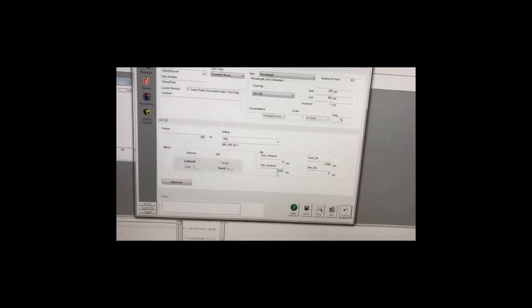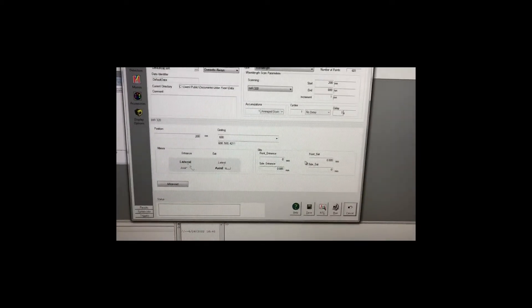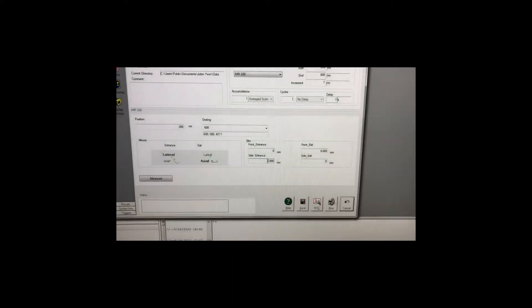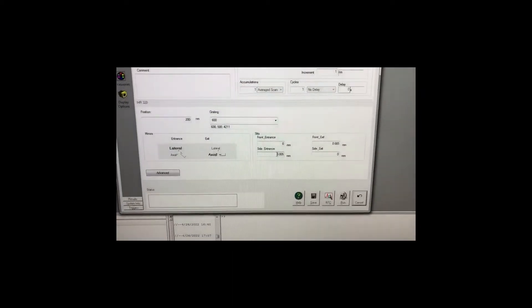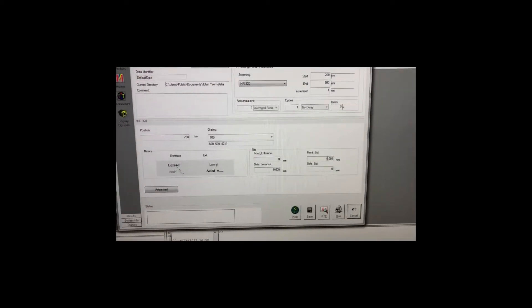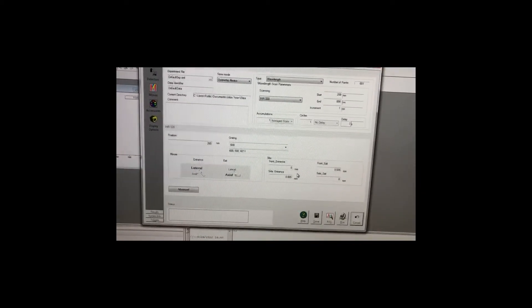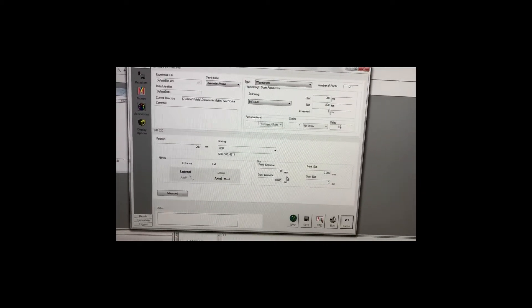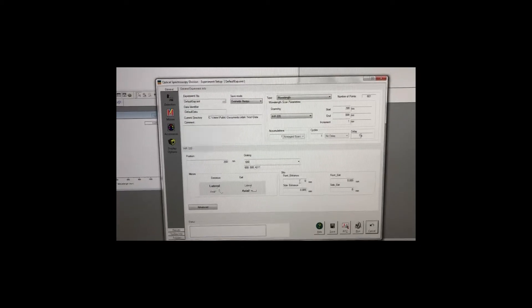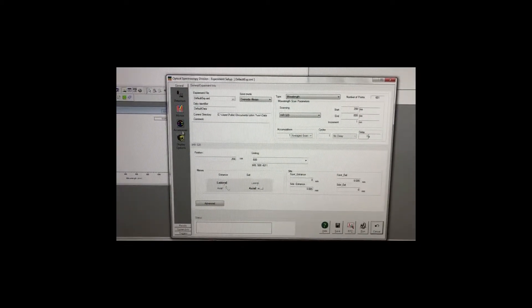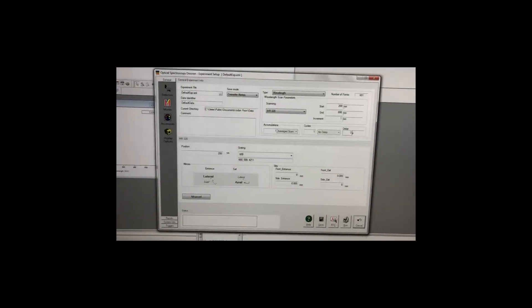Make sure that the slit, the front exit entrance and also the side entrance is based on what material you are using. If we are using InGaN, the size is 0.005 as mentioned in the step by step to perform optical measurement. Now you click monos and then you will click run.